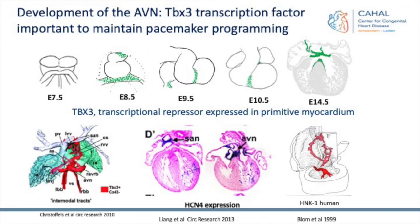For the development of the AV node, the TBX3 transcription factor is very important. The idea is that TBX3 represses working myocardium, so this primitive myocardium remains in that area, and eventually the AV node will develop from that. You see TBX3 staining at different stages, and in the end the final developing conduction system is visible with AV node, His bundle, and bundle branches.